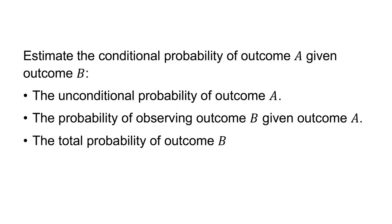Specifically, Bayes' rule allows us to use the following information to estimate the conditional probability of outcome A given outcome B: the unconditional probability of outcome A, the probability of observing outcome B given outcome A, and the total probability of outcome B.